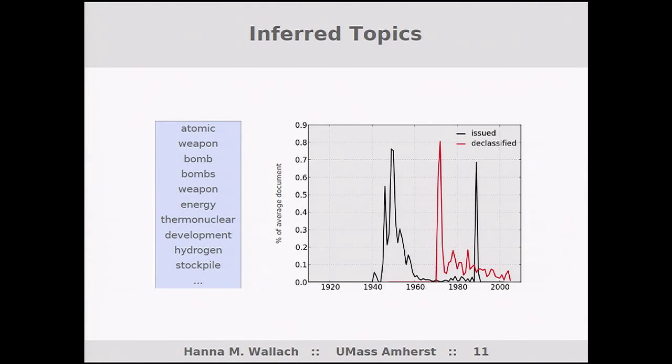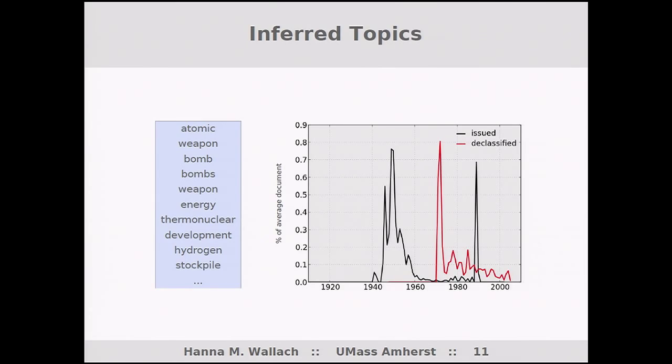Finally, here's a topic where the top words are atomic, weapon, bomb, and bombs. Here you can see a big spike and then a sort of dying off, starting somewhere in the late 40s and 50s. 1952 was the year of the first hydrogen bomb test. The spike over in 1989 relates to documents about Pakistan. The other interesting thing is that the declassification pattern — the curve in red — mirrors the shape of the black curve, which suggests these documents are probably being subject to systematic declassification after roughly 25 years.